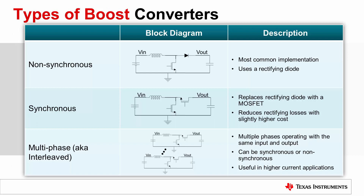Three main boost converter circuits exist: the non-synchronous boost, the synchronous boost, and the multi-phase (also known as interleaved) boost. The non-synchronous boost is the most common implementation — it uses a rectifying diode to steer the inductor energy into the output. Diode rectification is more common in boost converters because output voltages are typically higher, making diode losses less significant at higher output voltages and lower load currents. A synchronous boost converter replaces the rectifying diode with a rectifying switch, particularly useful at higher load currents to reduce conduction losses in the rectifier, though driving the high-side rectifier is more challenging since neither the drain nor source terminal of the MOSFET is grounded. The multi-phase boost, similar to the multi-phase buck, has the same input and output voltages but contains two or more phases, with interleaving becoming more useful as output power increases.